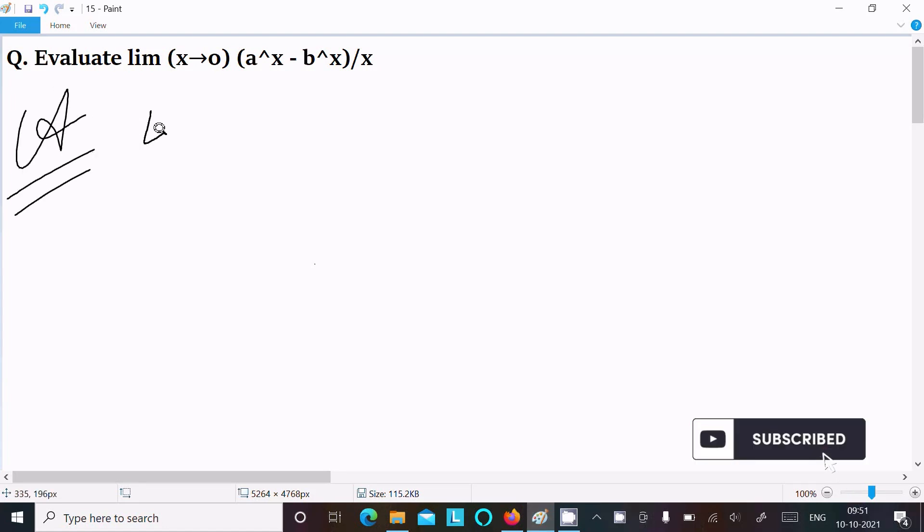So first you're writing the given limit x tend to 0, a power x minus b power x divided by x. So we can easily achieve the output if I add and subtract with 1.